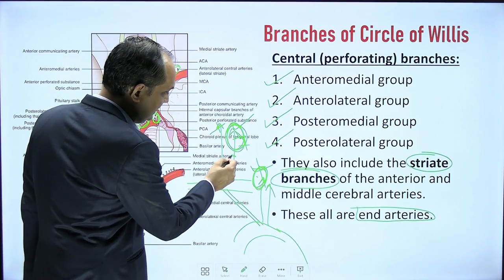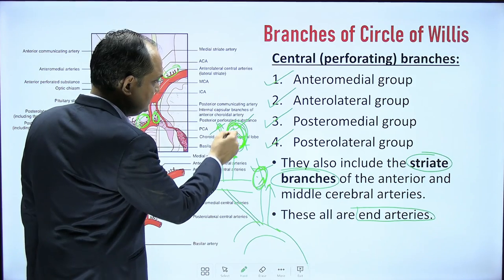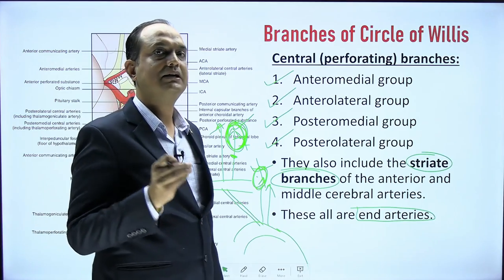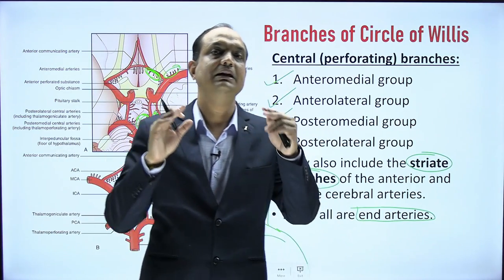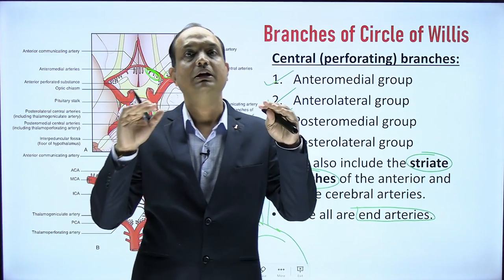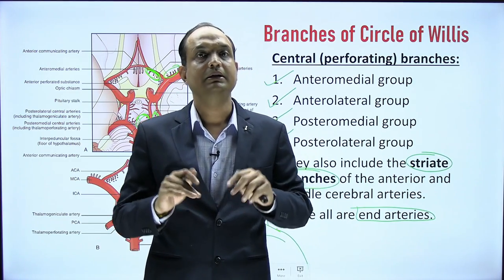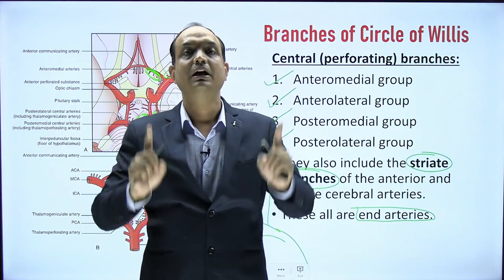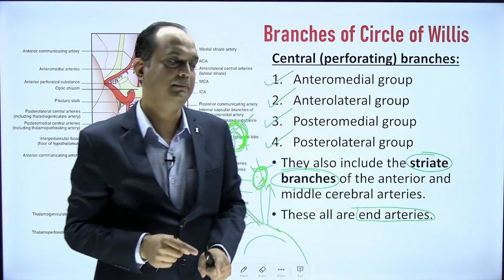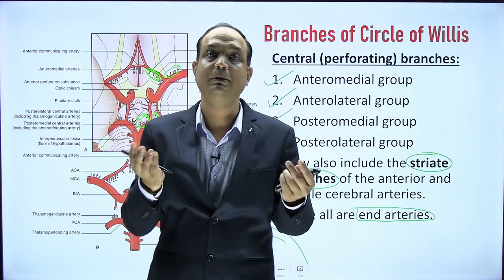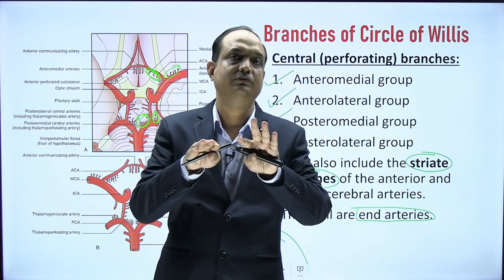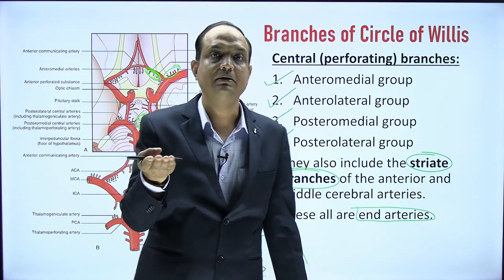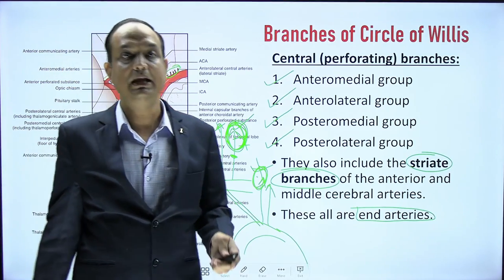Because these branches act as end arteries, if one artery is blocked, the area of the brain supplied by that branch will undergo ischemic changes. The Circle of Willis is an anastomosis of internal carotid and vertebral arteries, but their branches do not anastomose with each other inside the brain substance — the anastomosis is placed only outside the brain, on the base.